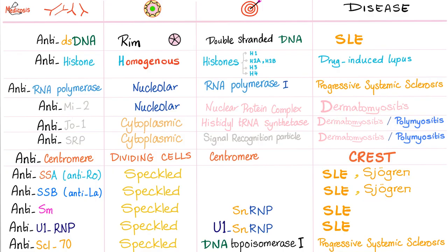Anti-MI2: these are nuclear antibodies that target the nuclear protein complex; they have good prognosis and are associated with dermatomyositis. Anti-Jo-1: cytoplasmic pattern; targets histidyl-tRNA synthetase — let's call him Joe; associated disease is dermatomyositis and polymyositis. Anti-SRP: cytoplasmic pattern; seen in dermatomyositis and polymyositis.